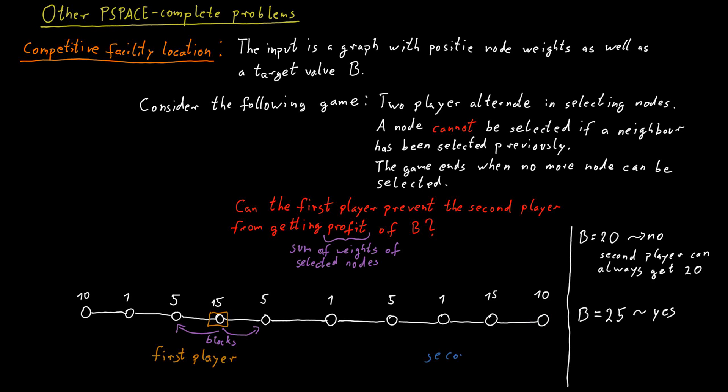So the first player picks the node of weight 15 closer to the middle of the line and the second player then picks the node of weight 15 towards the end of the line.